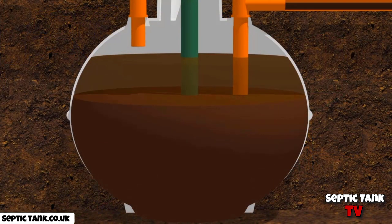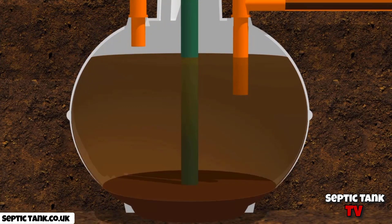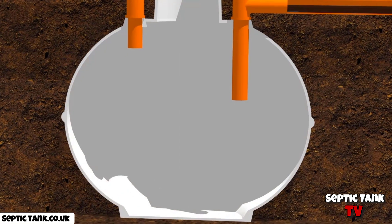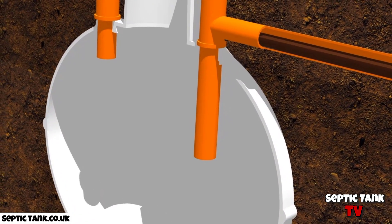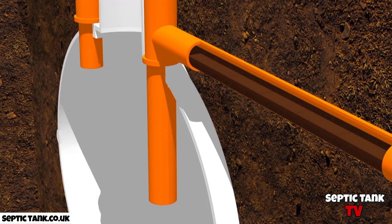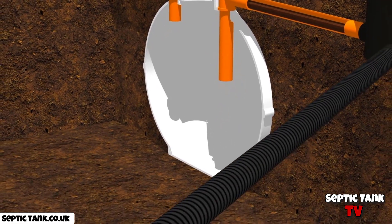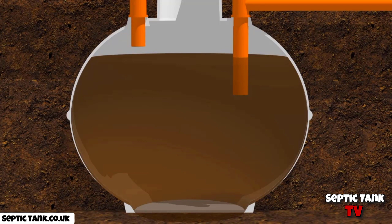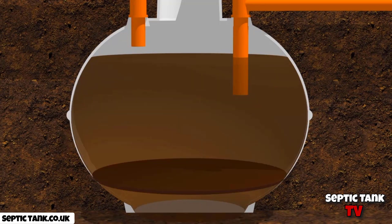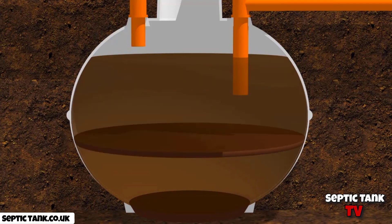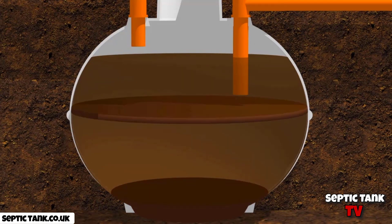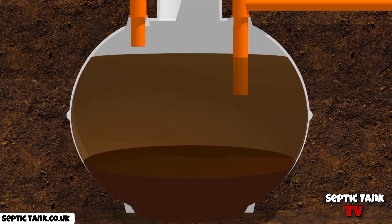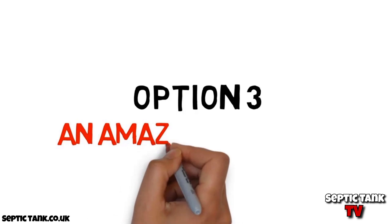Option two: septic tank emptying. To try and remove blockages and smells, many people get their septic tanks sucked out. Whilst this sounds like a good idea, it doesn't really fix the problem. Although the wastewater inside the tank is sucked out, the fat, grease, and sludge causing all the blockages is still stuck in all the pipes that lead to and from the soak away. The whole process starts over again within a few days, and at £200 each time to get the tank emptied, this can soon become quite an expensive option.